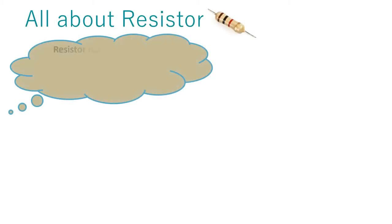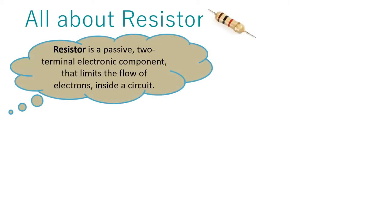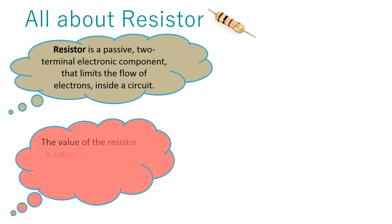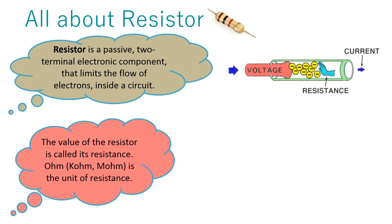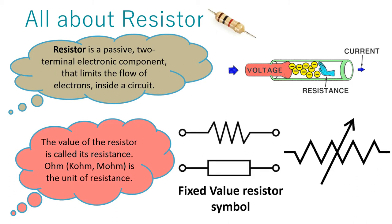Resistor is a passive two-terminal electronic component that limits the flow of electrons inside a circuit. The value of the resistor is called its resistance. Ohm is the unit of resistance. For higher values, we use kilo ohm and mega ohm. Higher the value of resistance, lower the current can pass through it. This is the symbol for the fixed value resistor and it is the symbol for the variable value resistor.